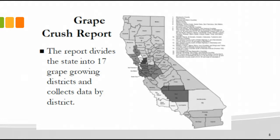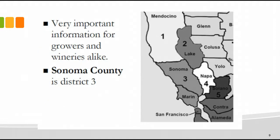Let's move on to the grape crush report. It just came out — it comes out in February every year and talks about the results of the prior harvest. The state is divided into 17 grape-growing districts shown on this map. If we zoom in on the next slide, you can see Sonoma County is District 3. If you Google 'California grape crush report,' the website comes up easily.